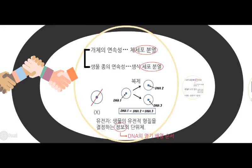세포 분열이란 세포가 단순히 반으로 쪼개지는 현상이 아니라 세포가 자신을 복제하여 자신과 똑같은 DNA를 갖는 두 개의 세포가 되는 것입니다. DNA란 유전자의 본체인데요. 유전자는 생물의 유전적 형질을 결정하는 정보의 단위체입니다. 이때 유전적 형질을 결정하는 정보는 DNA의 염기배열 순서의 형태로 저장이 됩니다.